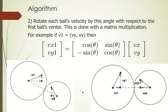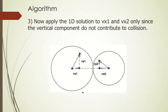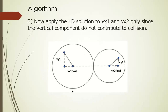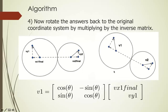Once you rotate, the vertical component doesn't contribute, so you can ignore vy1 and vy2. We use the one-dimensional solution to find vx1 final and vx2 final. Then we put it back together — vx1 final is the final velocity in the horizontal direction; in the vertical direction it's the same. We take that answer and rotate it back to obtain the original answer in the original coordinate system, by multiplying by the inverse matrix, which rotates in the other direction.